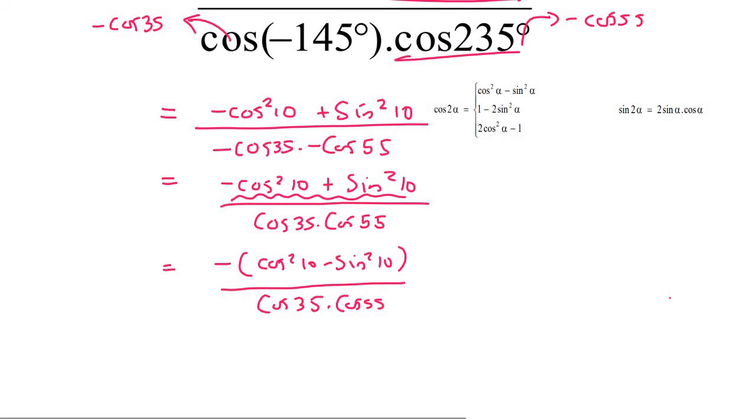So now at the top we definitely have this piece. So we can rewrite it. So that's going to become negative cos of 20. Because if this is alpha, then on the other side it becomes 2 alpha. So if this is 10, then when you rewrite it, it will become 20.